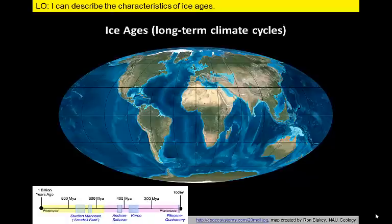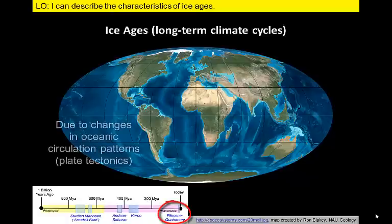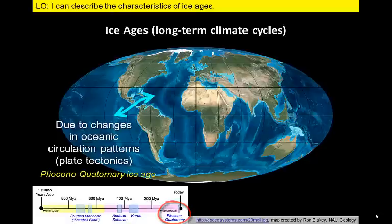However, 3 million years ago the distribution of continents was not much different from today, with one significant exception. Water was flowing freely between the Atlantic and Pacific Oceans through a narrow gap that separated North and South America. That gap soon closed and circulation patterns in the Atlantic Ocean changed, leading to more humid air carried further north and resulting in an increase in precipitation and the development of ice sheets in northern latitudes.